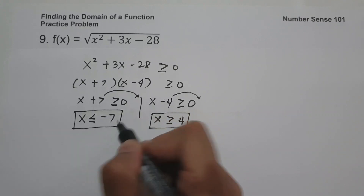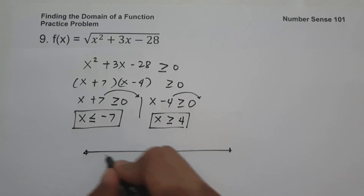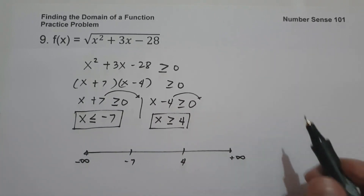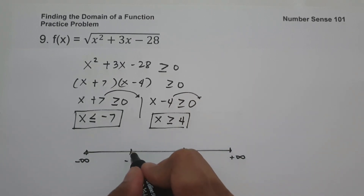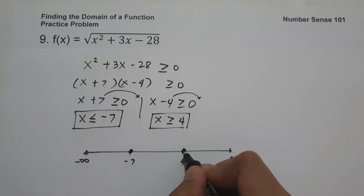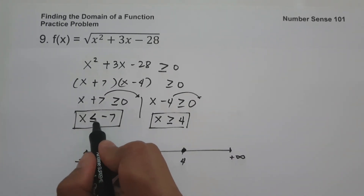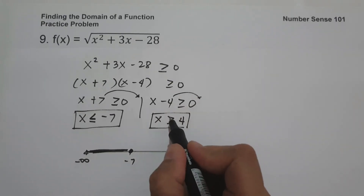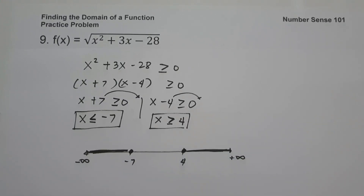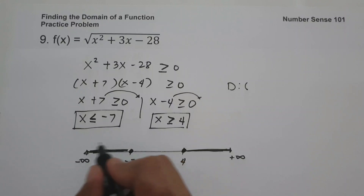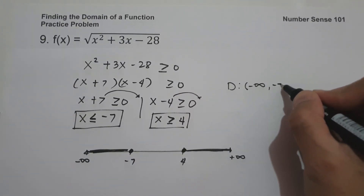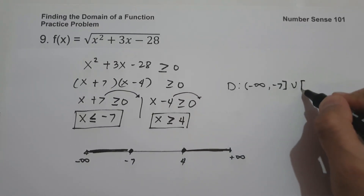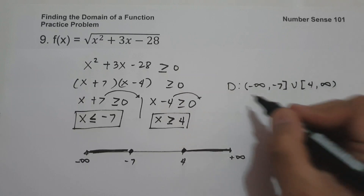Drawing a number line with negative 7 and positive 4, we use closed circles because both are included. The region to the left of negative 7 satisfies x ≤ negative 7, and the region to the right of 4 satisfies x ≥ 4. The domain is from negative infinity up to negative 7, bracket, union bracket 4 up to positive infinity, and this is our answer.